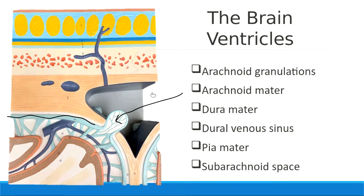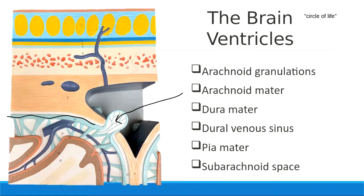Remember we talked about how with the fluid we have a circle of life. Cerebrospinal fluid starts as plasma, the fluid inside blood vessels. The specific blood vessels that leak plasma to help make CSF are called the choroid plexus. When that fluid gets into either the ventricles or into the subarachnoid space, we call it cerebrospinal fluid.